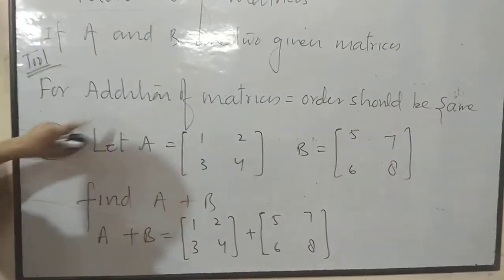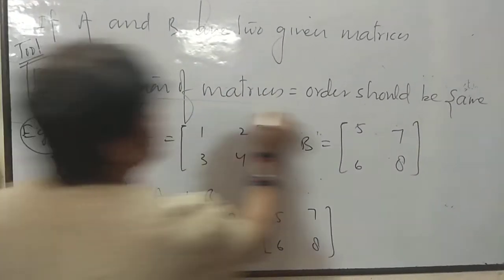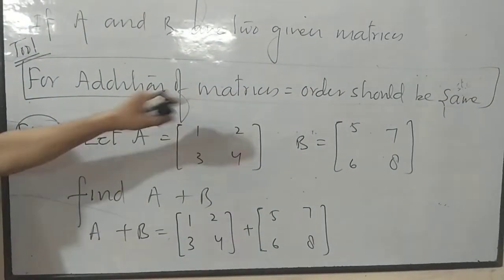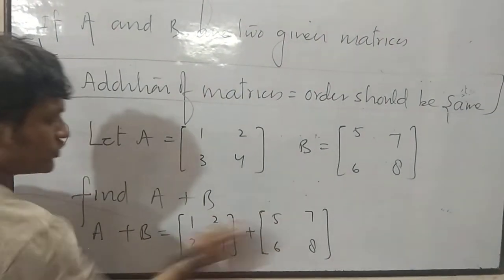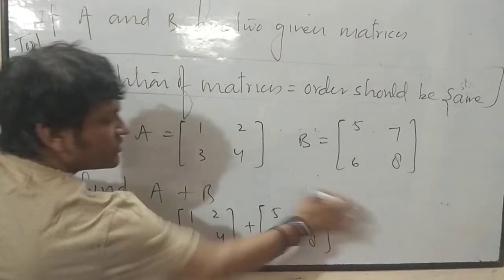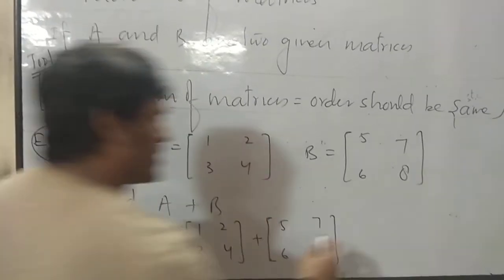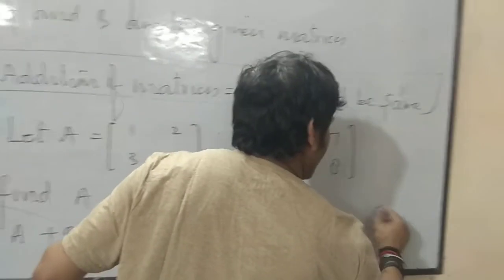Now listen carefully. What I have written. For addition, this rule is important. For addition of matrices, order should be same. Now order check it out. Two rows, two columns. Two rows, two columns. Both the matrices have same order. Now you can add one matrix to another.